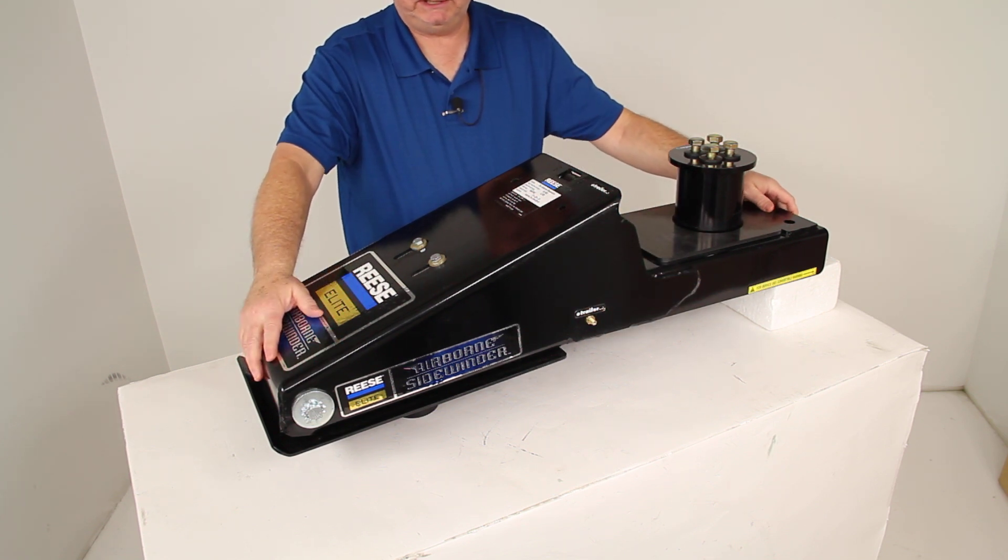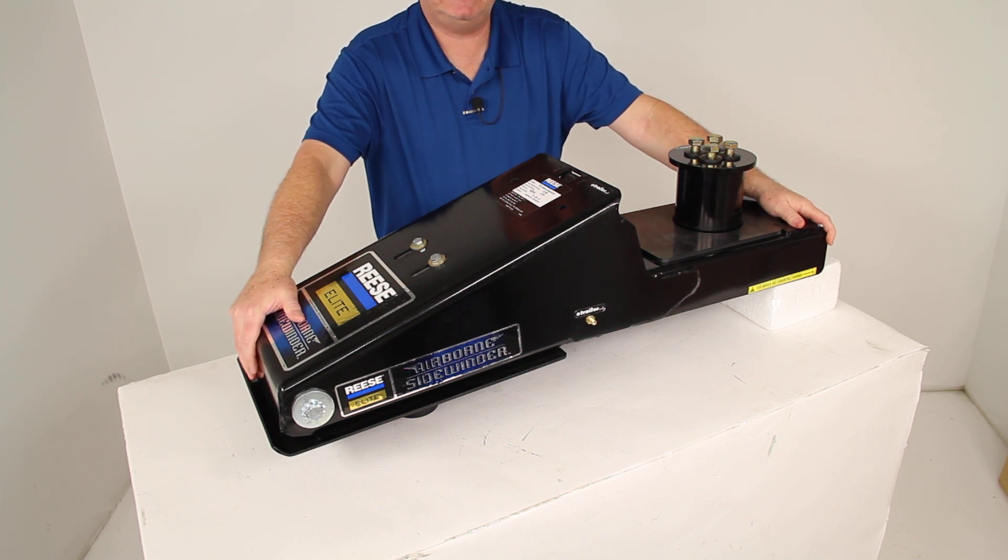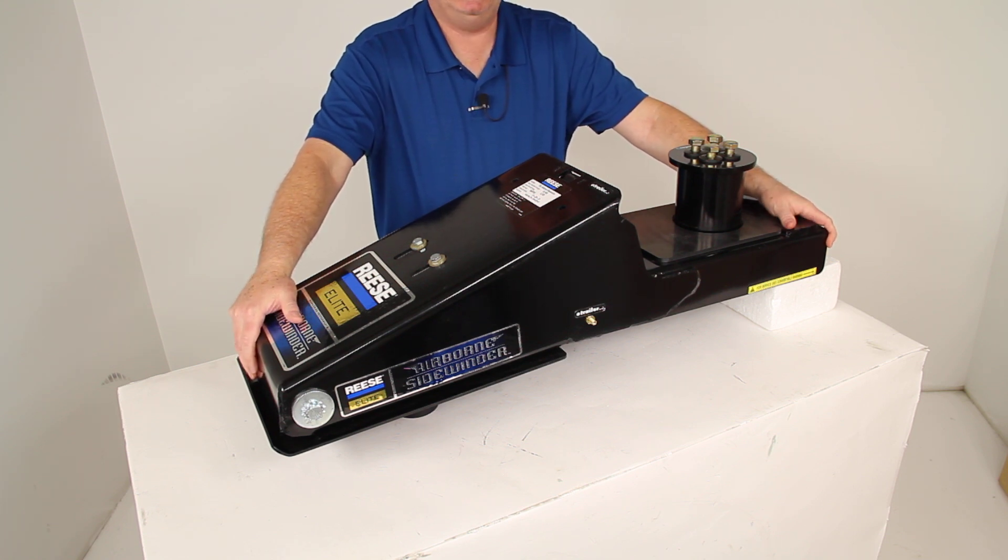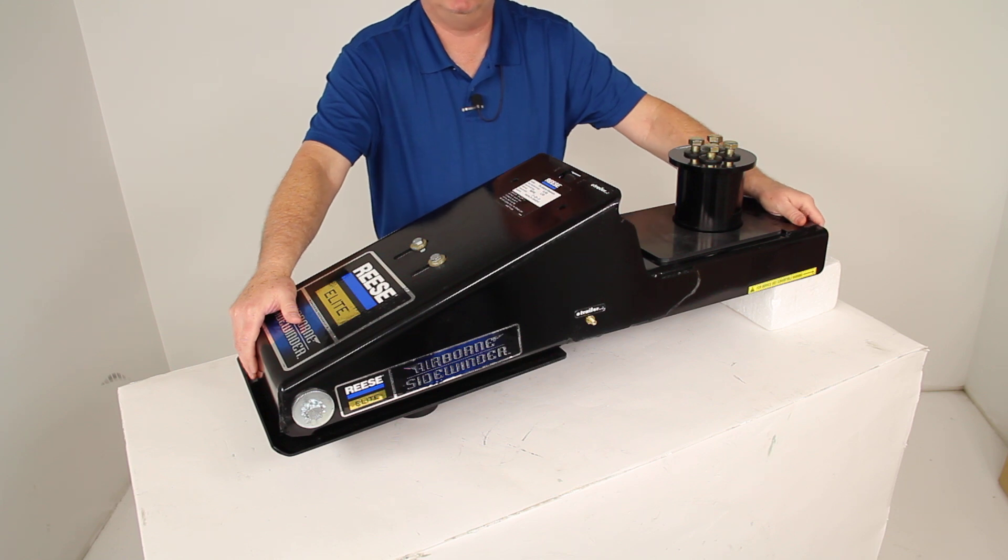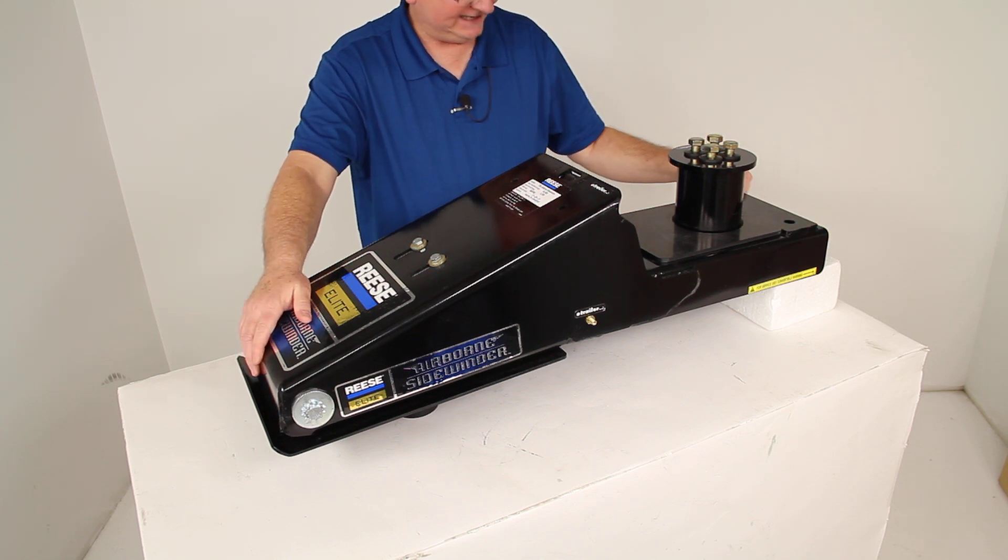And that should do it for the review on part number 5AS16K, the Reese Elite Airborne Sidewinder Combo in the 16,000 pound weight capacity.